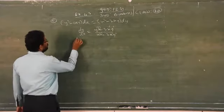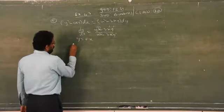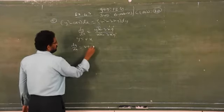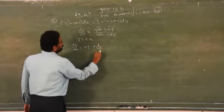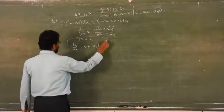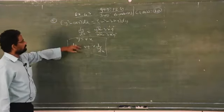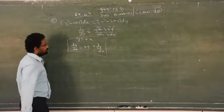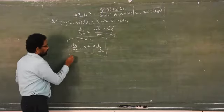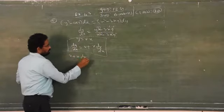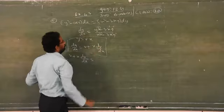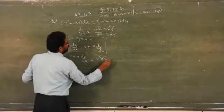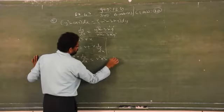Now, you have to replace y = vx and dy/dx = v plus x·(dv/dx). This is very important — you know this already. Just replace y with vx and dy/dx with v plus x·(dv/dx). So, v plus x·(dv/dx) is equal to y², that is v²x² minus 2x²v.